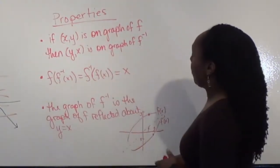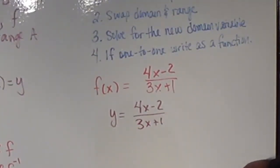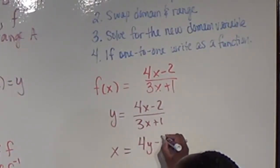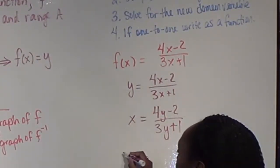So given all of this information, how do we actually find the inverse? To find the inverse given a function, the first thing I'm going to do is write it as an equation. I have an example here: f of x equaling 4x minus 2 over 3x plus 1. So the first thing I'm going to do is rewrite this as y equals. Once I have the equation, I'm going to swap the domain and range variables. My domain here is x, range is y, so I'm just going to replace x with y and y with x.